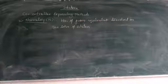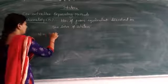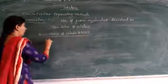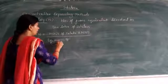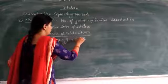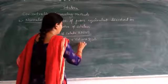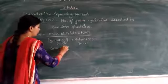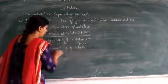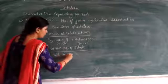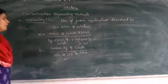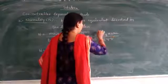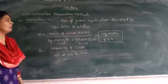So normality equals to mass of solute into thousand, upon equivalent mass of solute into volume of solution in milliliter. It can also be expressed simply as gram equivalents of solute upon volume of solution in milliliter. It is called normality — number of gram equivalents of solute dissolved in one liter of solution.